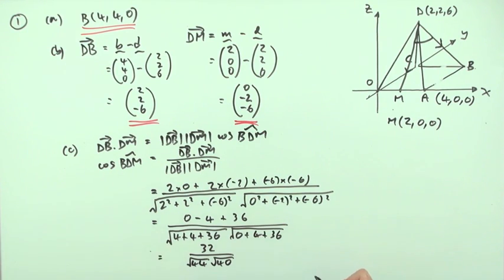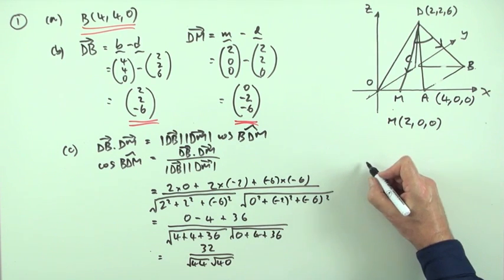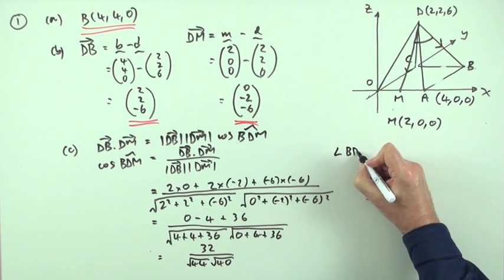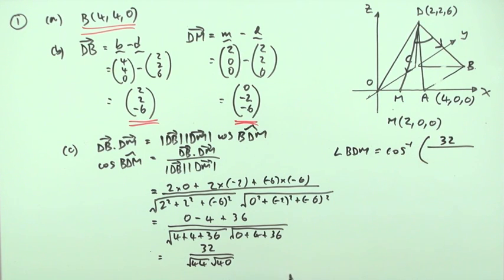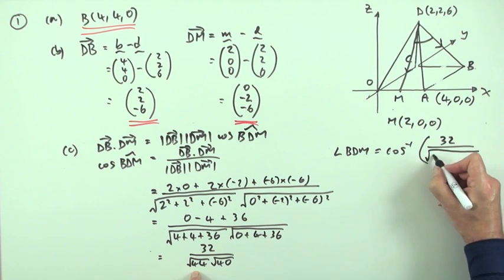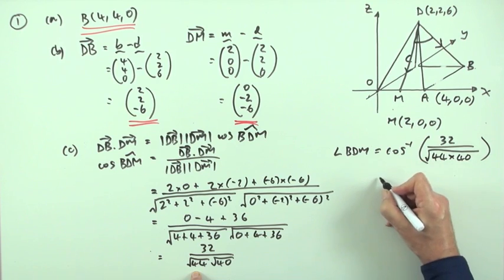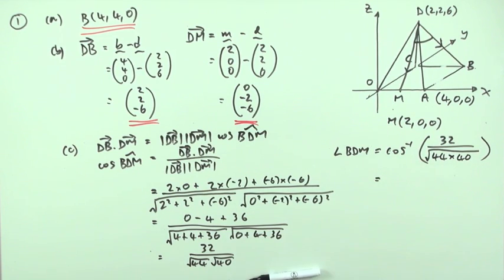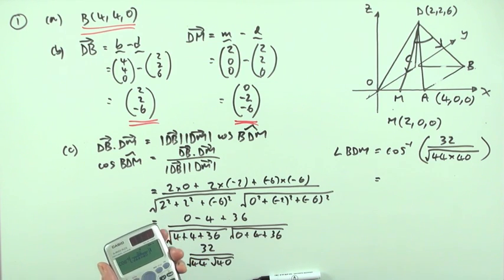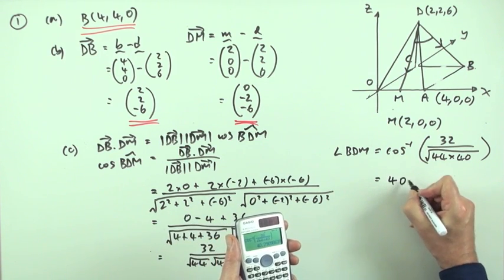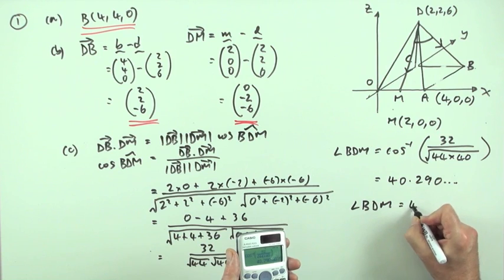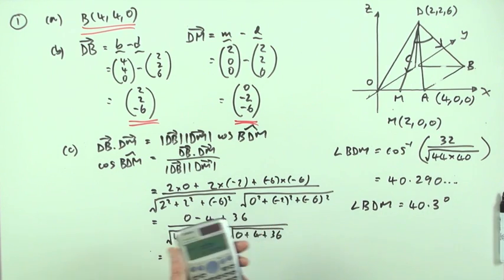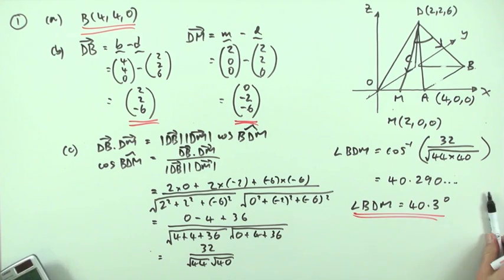Then the last part would be, get rid of the cos, and there's your answer. I'll just put that over here then. Which means that angle BDM is going to be the inverse cos of this thing. 32 over, and there's no point simplifying those surds. You can just leave them the way they are and just put it into your calculator. But one thing you can do is just put one big square root and have the 44 times the 40 inside it. And that whole thing can just get typed into your calculator. Which gives you 40.290 dot dot dot, so you can say angle BDM is 40.3 degrees. And that would be it.